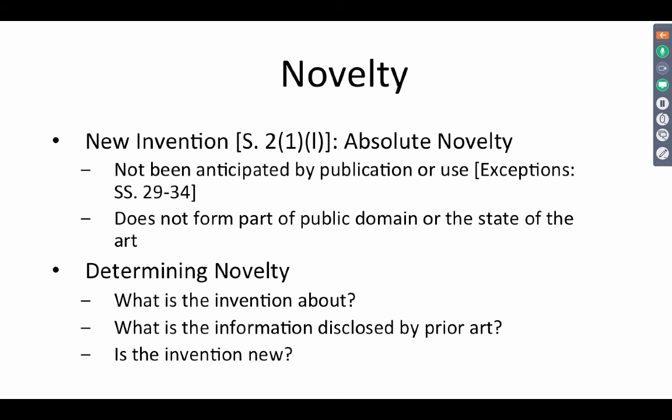There are exceptions to anticipation. For example, if you present a paper before a learned society or a scientific community, the Act technically allows you a one-year grace period to file a follow-up application. There are some exceptions whereby certain disclosures will not kill the novelty of the invention. Novelty is defined as something that does not form part of the public domain or state of the art. Even a thesis lying in a university library — though not searchable on the internet — could amount to something in the public domain. Various case laws explain what constitutes public domain and state of the art.